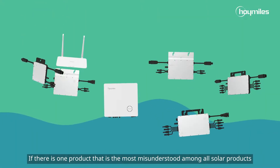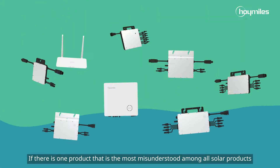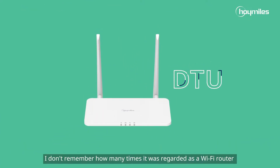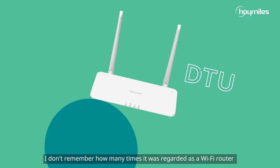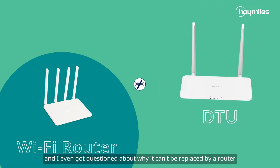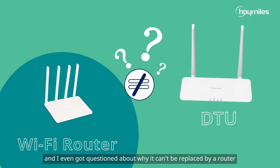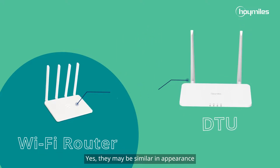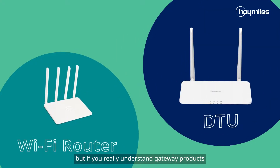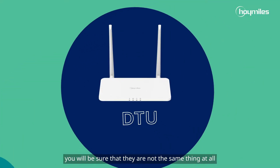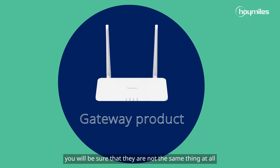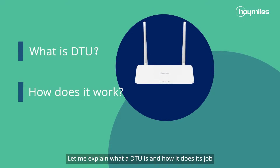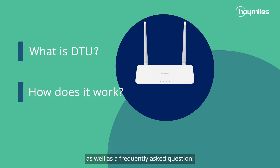If there is one product that is the most misunderstood among all solar products, I think it is DTU. I don't remember how many times it was regarded as a Wi-Fi router, and I even got questioned about why it can't be replaced by a router. They may be similar in appearance, but if you really understand gateway products, you will be sure that they are not the same thing at all. Let me explain what a DTU is and how it does its job, as well as a frequently asked question.